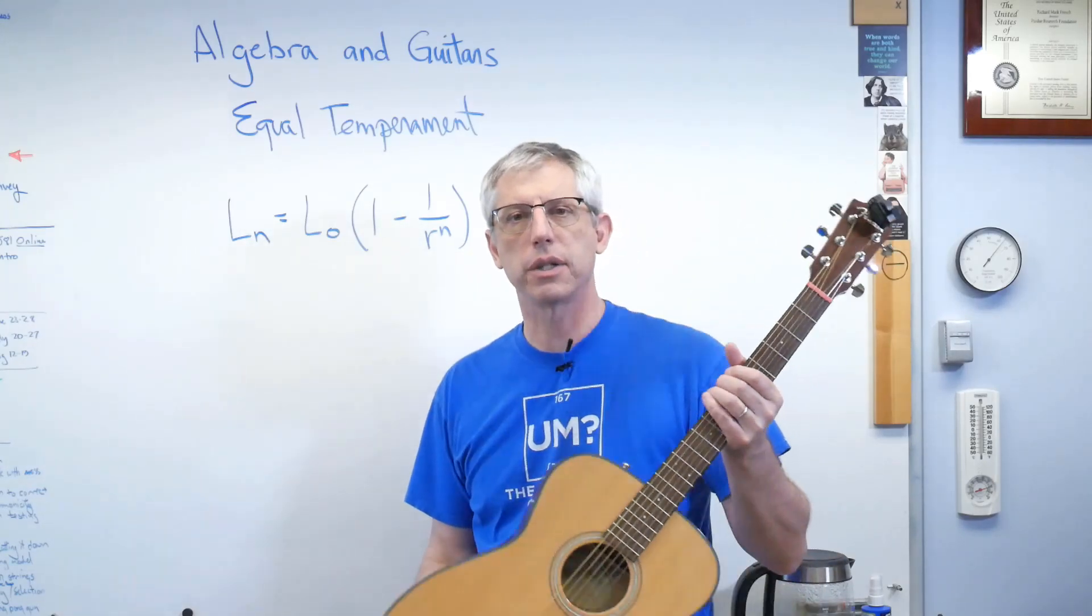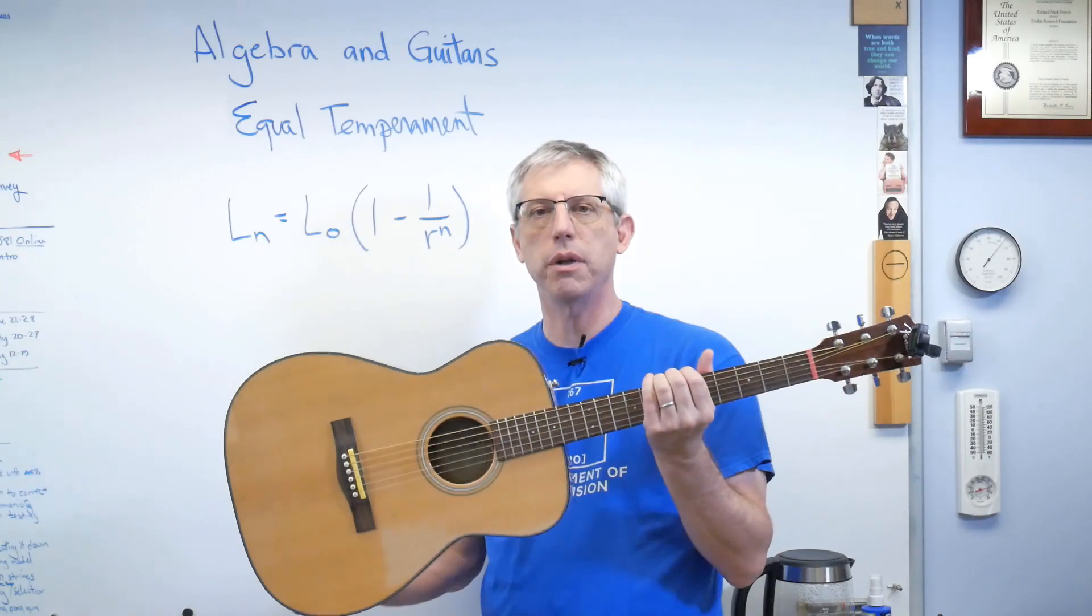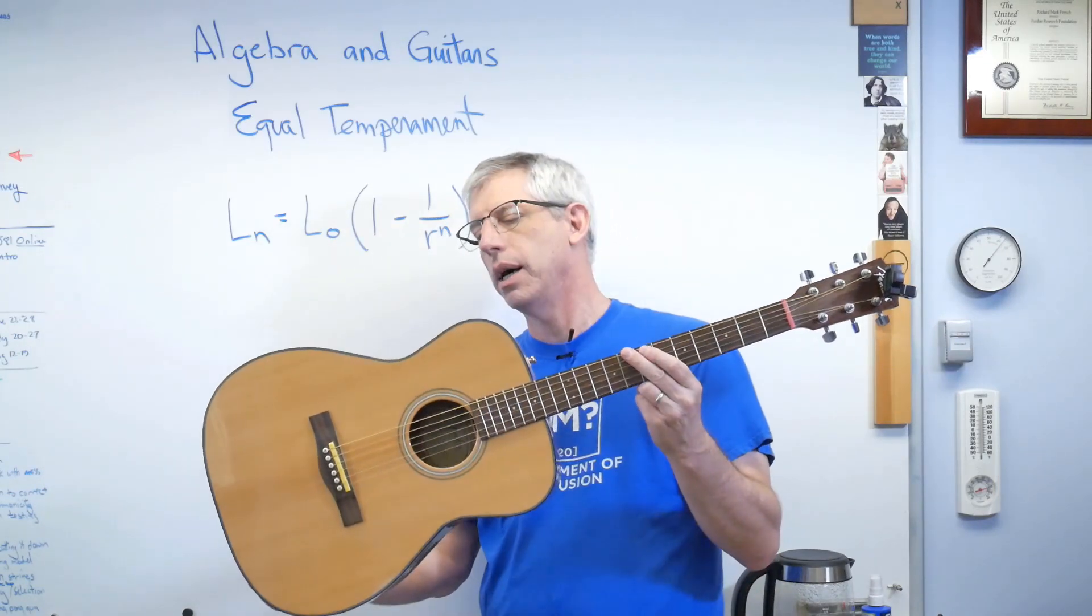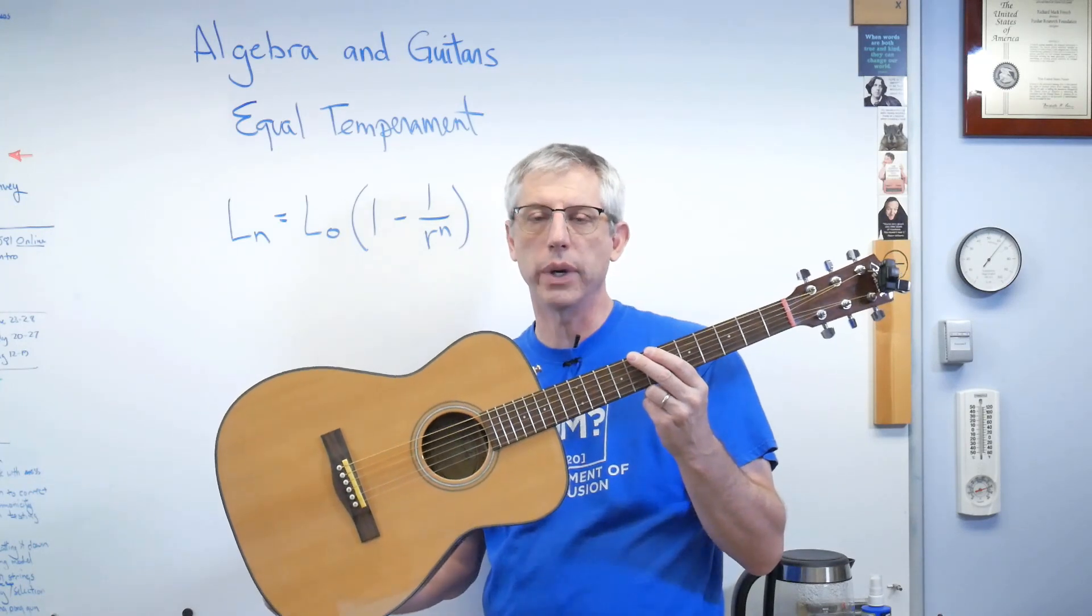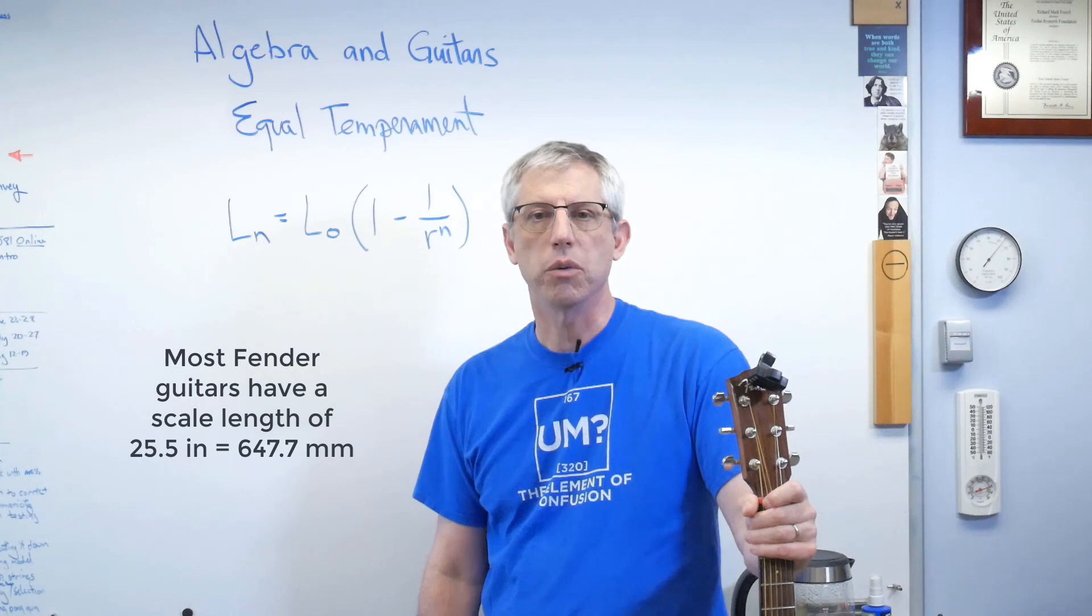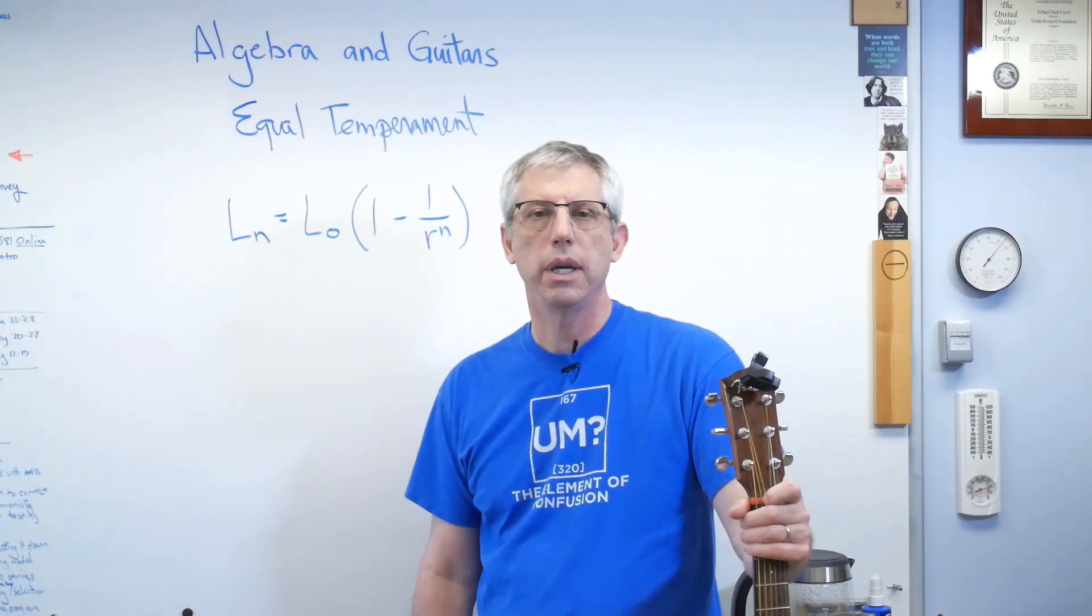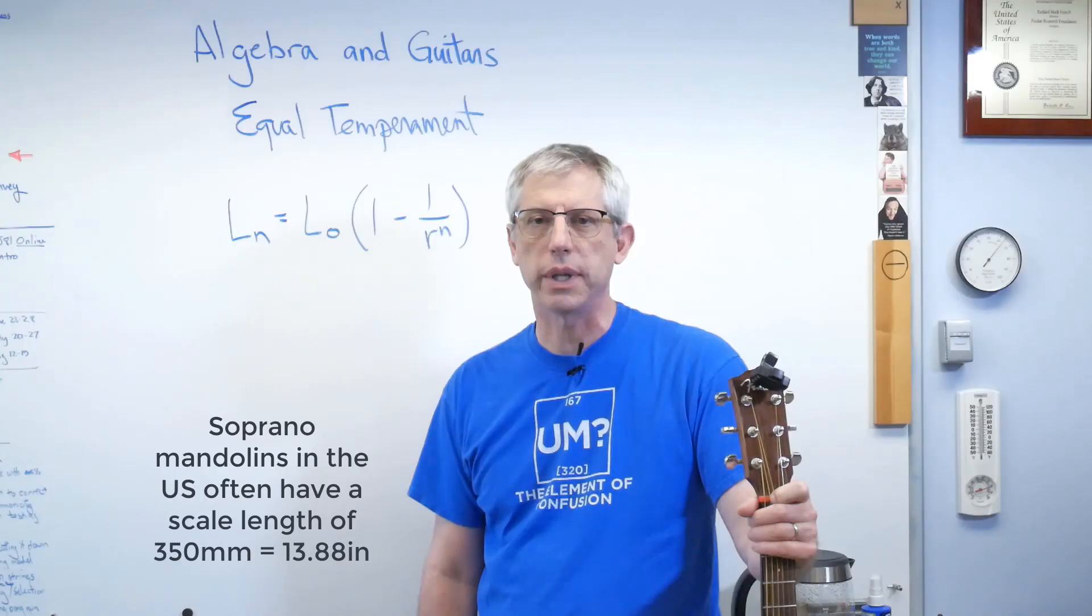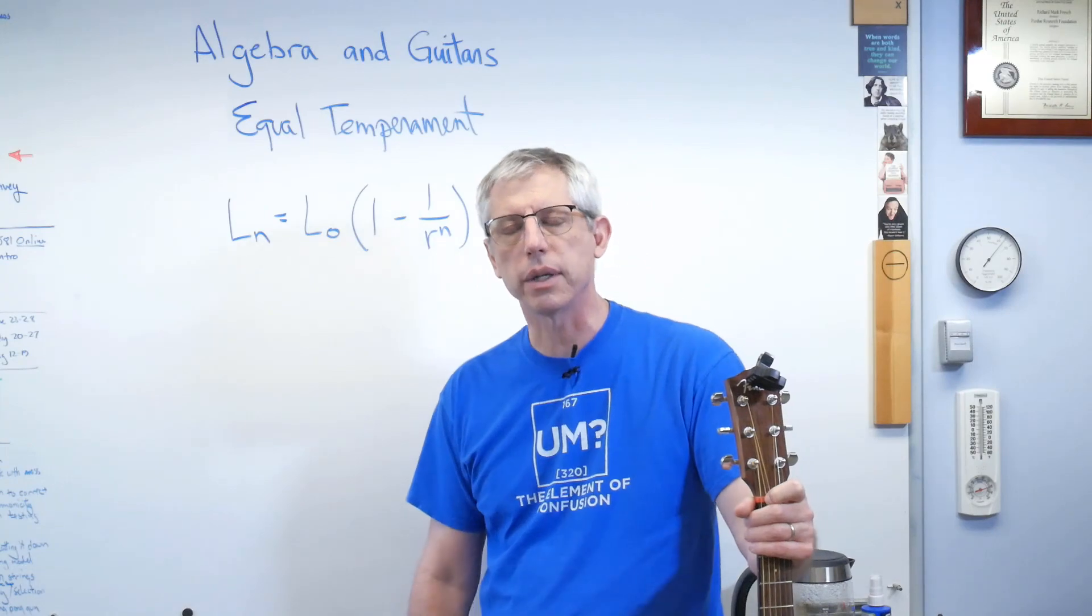Now, just for context, the scale length on this one is 25 and a half inches. It's in inches because it was designed in the U.S. That's 647.7 millimeters. The shortest instrument that you routinely see that has frets on it is a mandolin. And mandolins typically have scale lengths of around 13 and a half inches. Sorry, I don't know what that is in millimeters because I live in the U.S.